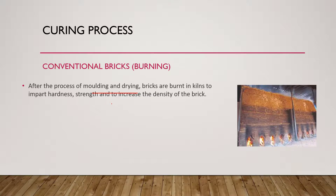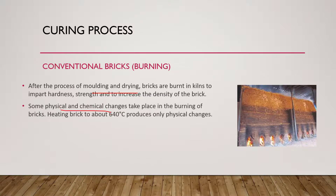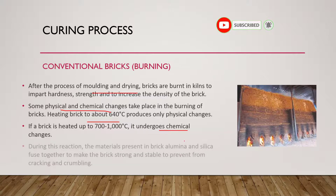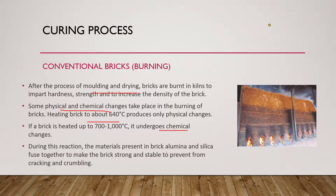Red bricks are not cured; instead they are burned in kilns after molding and drying. Burning imparts hardness, strength, and density. Heating bricks to about 640°C produces only physical changes, while temperatures of 700–1000°C cause chemical changes where alumina and silica fuse together, making the brick stronger and more stable, preventing cracking and crumbling.